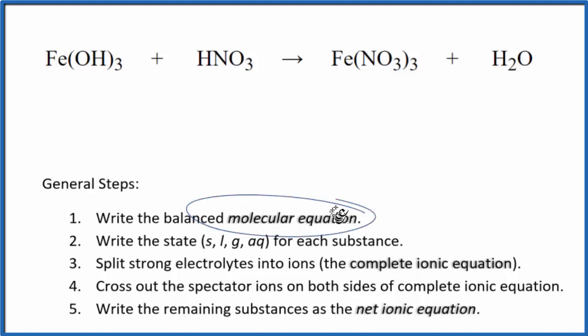First thing we need to do is balance the molecular equation. I can see there are three of these nitrate groups here and only one here, so I'm going to put a 3 in front of the HNO₃. It looks like at this point if I put a 3 in front of the H₂O, this equation will be balanced. There's a link in the description if you need help balancing the molecular equation.